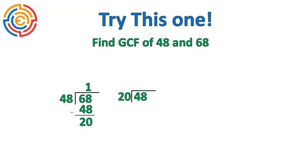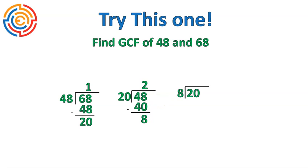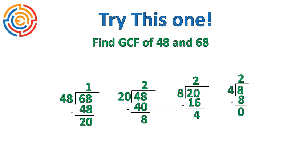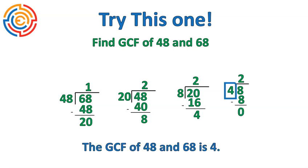How many groups of 20 inside of 48? There are 2. Two times 20 is 40. We subtract and get 8. Again, 20 goes inside and 8 becomes our new divisor. There are 2 groups of 8 inside of 20. Two times 8 is 16. When we subtract, we get 4. At this point we can see this is nearly done — 8 divided by 4 is 2, leaving us with a zero remainder. So 4 is the greatest common factor of 48 and 68.